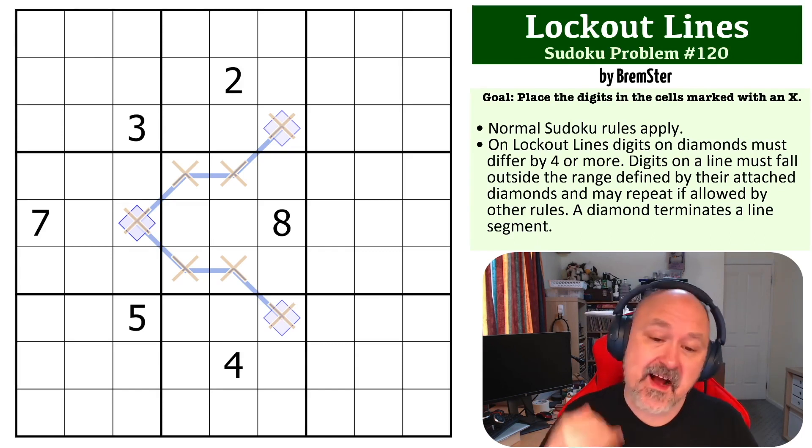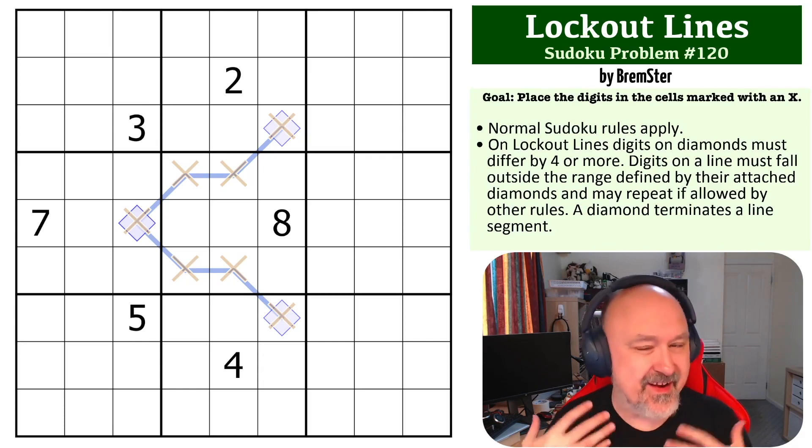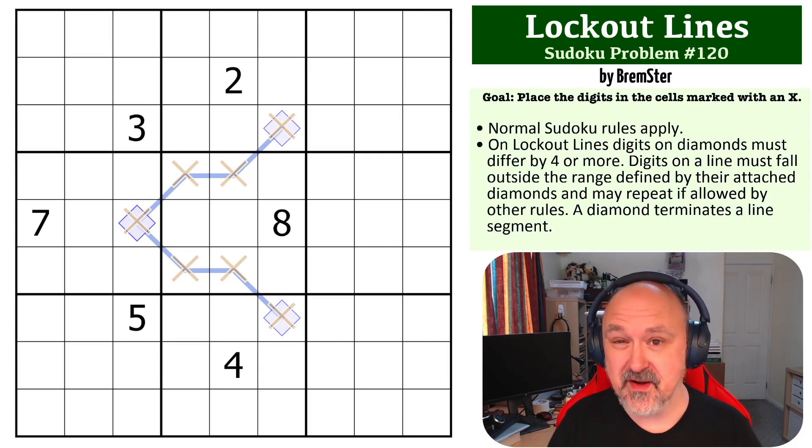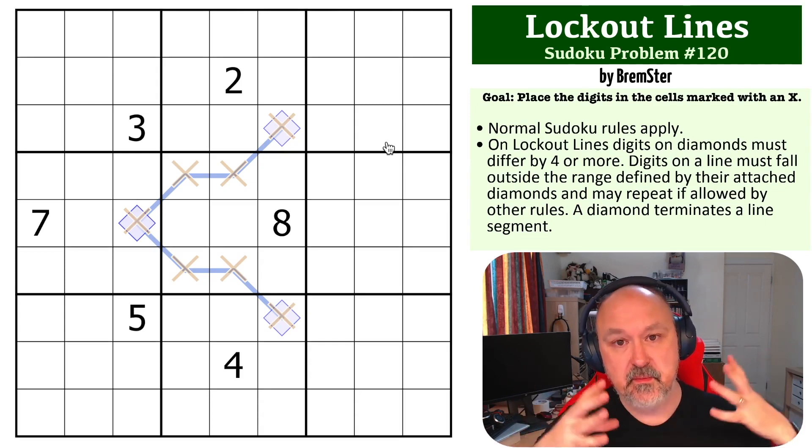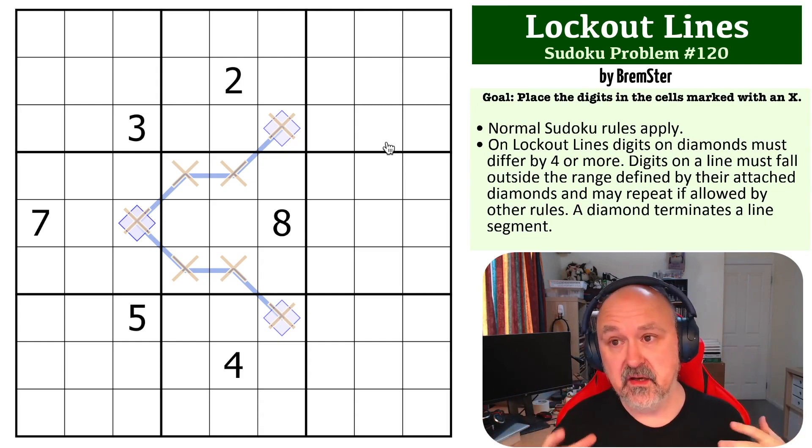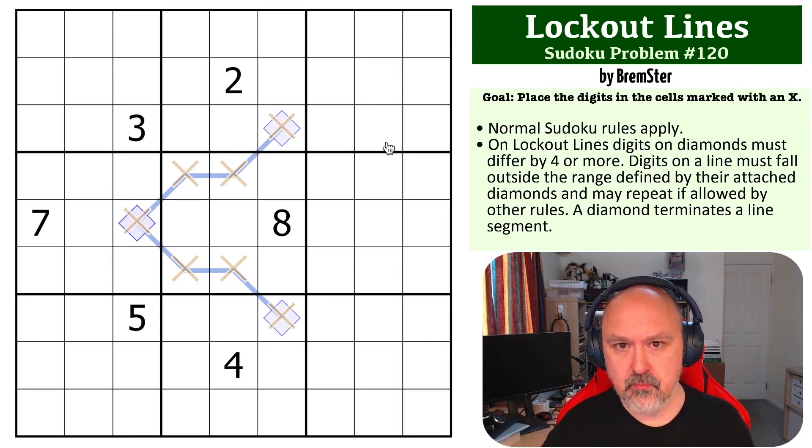Or more accurately, I will try and explain how this one works, because while I created this one, and I know what it is, I've tried a couple of times to explain it, and it's a little tricky. So one of the important concepts of lockout lines is because digits have to be outside the bound of the line, and the diamonds must differ by four or more, you have a lot of pressure that is caused by that.